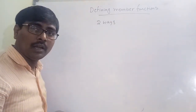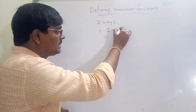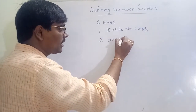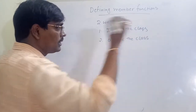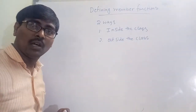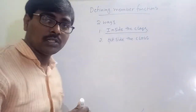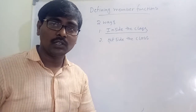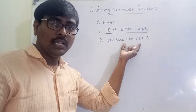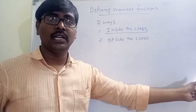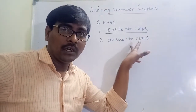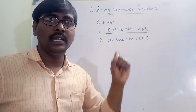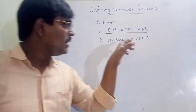Member functions are defined in two ways. One is inside the class, and the second one is outside the class. Inside the class means the definition of the function is written inside. Outside the class means the function is defined outside, but remember one point: even though the function is defined outside the class, the header of the function is declared inside.